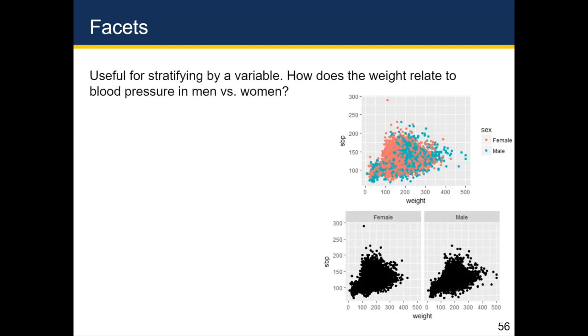So while it's true that we could have used position equals dodge to handle the situation in a bar chart, there's no equivalent to position equals dodge when it comes to a scatter plot. Sure, we could color the points separately for men and women if we wanted to look at the relationship between weight and systolic blood pressure separately for men and women. But because there's so much overlap in the points, it actually becomes hard to appreciate whether the relationship between weight and systolic blood pressure is the same or similar for men and women. So here, it makes a lot more sense to try to have two side-by-side plots where one plot is for men and one plot is for women.